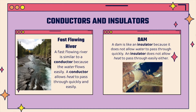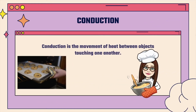So a conductor allows heat to pass through quickly and easily, and an insulator does not allow heat to pass through easily. Conduction is the movement of heat between objects touching one another. Those chocolate chip cookies on the cookie sheet are going to feel the heat from that sheet and start to smell and taste so good once they are cooked.